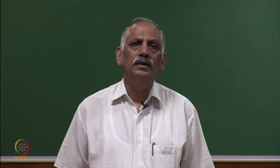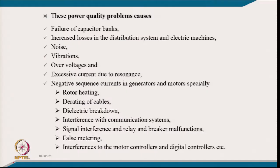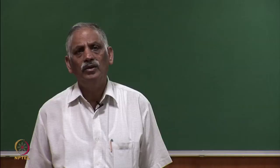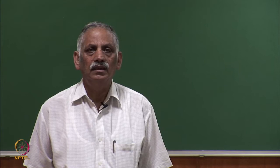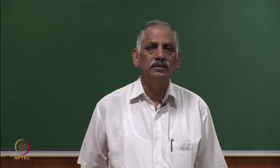Power quality problems cause derating of cables because more current is drawn compared to the fundamental for which most distribution systems and cables were designed. They also cause dielectric breakdown due to excessive voltage, interference with communication systems, signal interference, and relay and breaker malfunction.